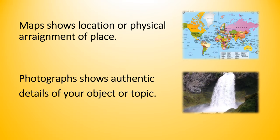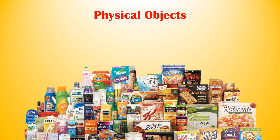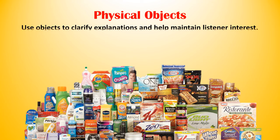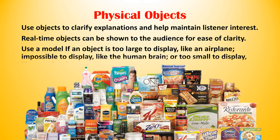Maps and photographs can also be considered part of no-tech aids. Maps show the location or physical arrangement of a place, and photographs show authentic details of your object or topic. Some presenters also use physical objects during their speech to clarify explanations and maintain listener interest. Use a model if an object is too large to display, like an airplane; impossible to display, like the human brain; or too small to display, like a molecule.